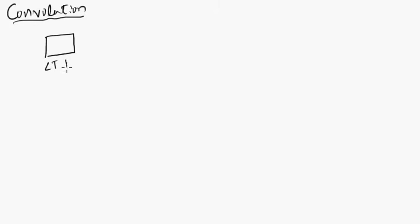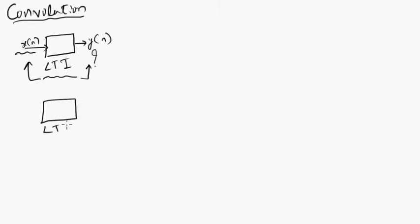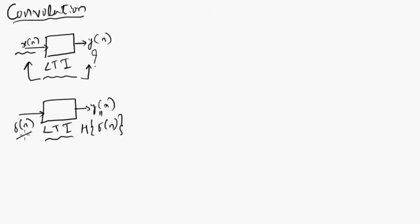In this video we will try to understand a very important concept called convolution. For this, let us consider an LTI system — let this block represent an LTI system which has an input x[n] and output y[n]. Here we only know what our input is, but we do not know how this system behaves with respect to this input, and hence we cannot determine its output. So what we can do is consider the same LTI system, this time feed it with an impulse, and we get output y[n] which is the impulse response h[δ(n)].